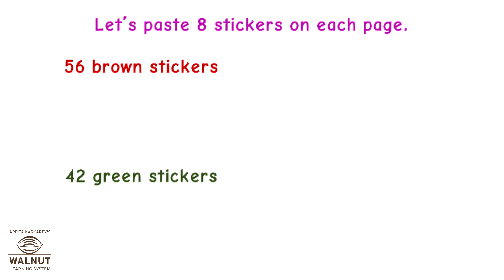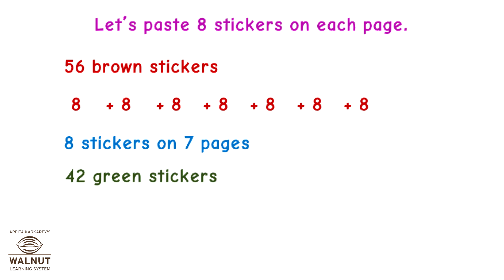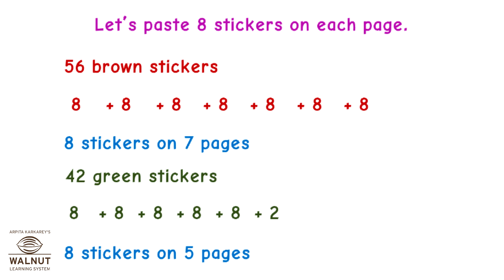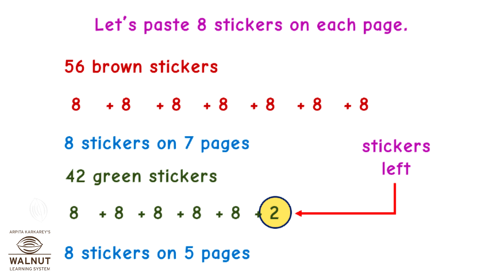Let's paste 8 stickers on each page. For brown stickers, we divide 56 by 8 and get 7 — that is 8 stickers on 7 pages, and we have no stickers left. So we can paste 8 stickers per page for brown. But for green stickers, we divide 42 by 8 and get 5 — that is 8 stickers on 5 pages, but we are left with 2 stickers. So we cannot paste 8 stickers on each page.